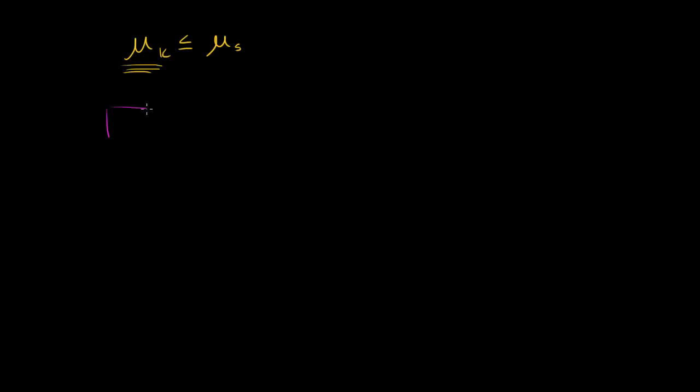So I have a block that is stationary on top of, let me do the surface in a different color, on top of some type of surface right over here. And over here I'm going to have a block moving at a constant velocity relative to some surface, relative to the same surface. So let me draw it out. So this is moving at some constant velocity.